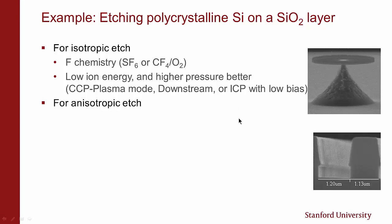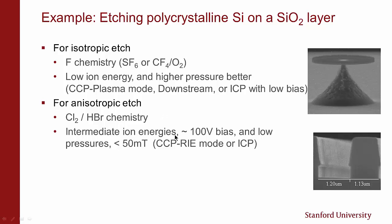For anisotropic etching of polysilicon, we want to use chlorine/HBr chemistry. Chlorine gives anisotropic etching of polysilicon but tends to have problems with micro-trenching. We get a bigger process window if we add HBr chemistry, which gives a little bit of sidewall deposition and less tendency for micro-trenching than chlorine by itself. For this case, we want intermediate ion energy — around 100V bias — and low pressures below 50 milliTorr. This could be CCP in RIE mode, or ICP.